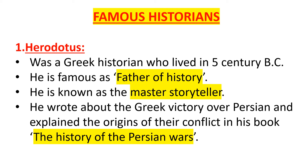So the first example, the first name who is very famous, is Herodotus. He was a Greek historian who lived in the 5th century BC, and he is famous as the father of history. He is the first man who actually wrote history, and he is also known as the master storyteller because he was very famous for writing and telling stories to others.